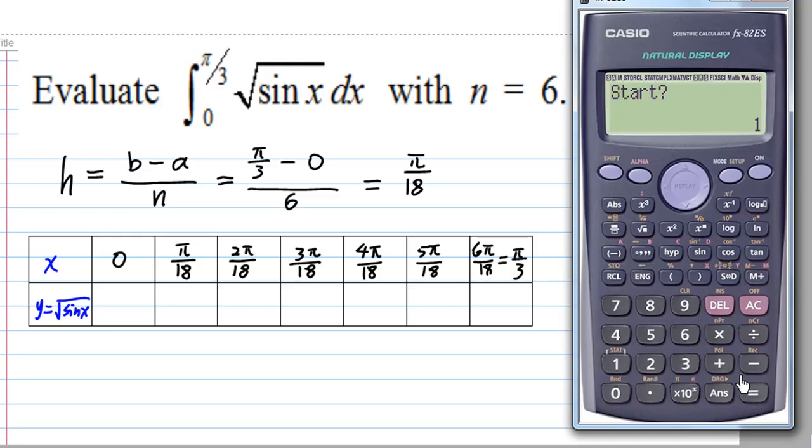The starting value of x will be 0, the end value of x is π over 3, so I press shift π divide by 3. The step size is the width, which is π over 18. Then I'll get a table.